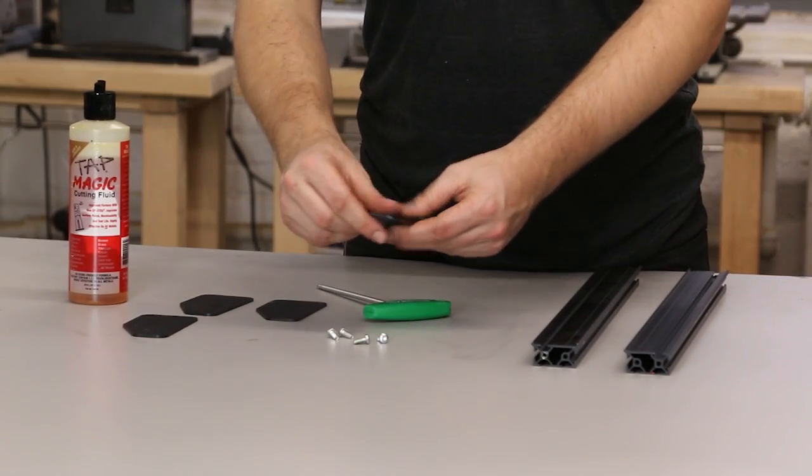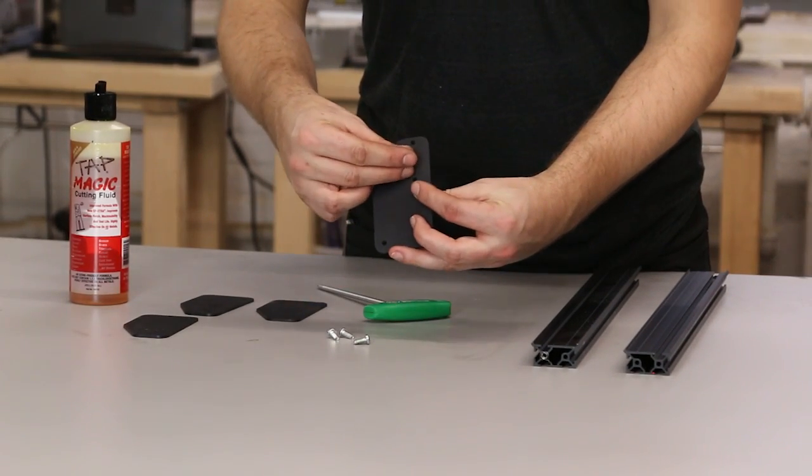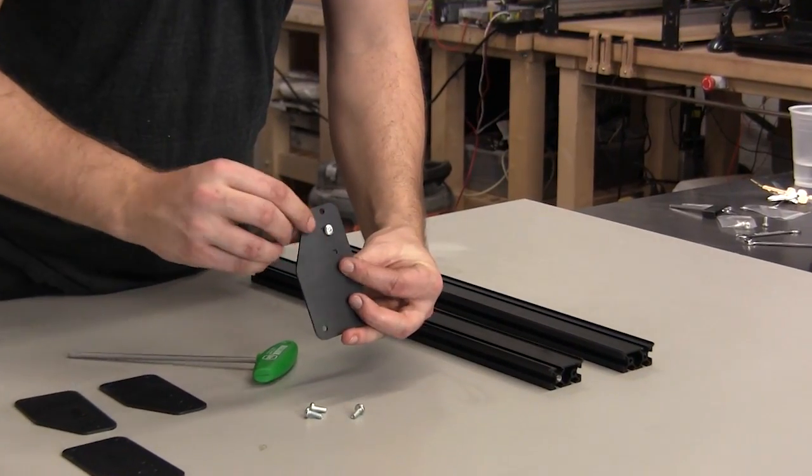Now let's assemble the Y-axis of your X-carve. We'll be using self-tapping screws again, just like the X-axis.